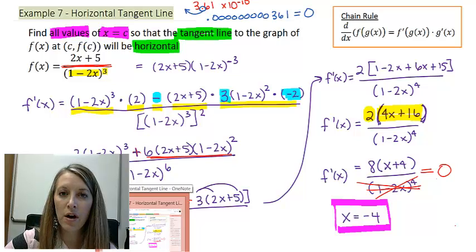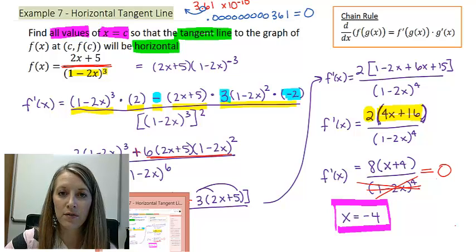So again, in this example, we've just combined two of our things that we've already known. How to figure out where our tangent line is horizontal, and how do we use our chain rule to figure that out when we need to take the derivative.